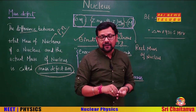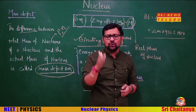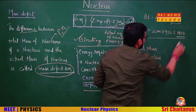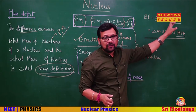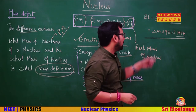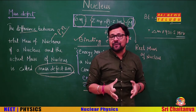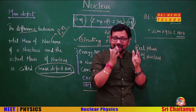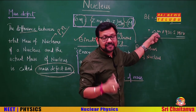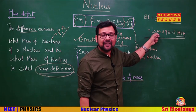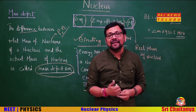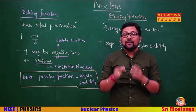When solving numericals, you will see two kinds of units for binding energy: joules and mega electron volts. When using joules, write BE = Δm × c². But when the mass defect is given in atomic mass units, you can directly multiply by 931.5 MeV to get the binding energy in MeV, since 1 amu = 931.5 MeV.